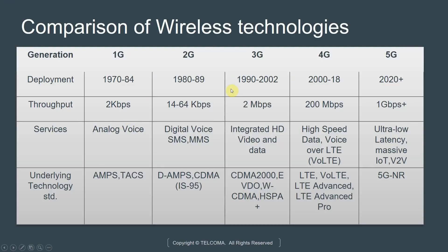Here in this table, we summarize the key differences between all these technologies, comparing them by their deployment timeline, their throughputs, the services, and the underlying technology standard. Without spending too much time on 1G and 2G, I'll just start by comparing 3G, 4G, and 5G.